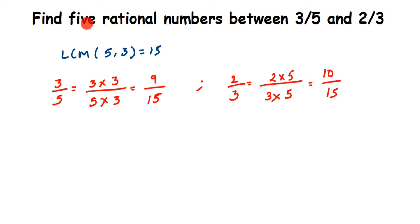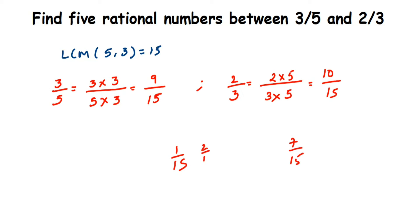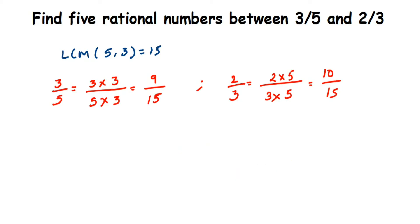The question asks for five rational numbers, but between 9/15 and 10/15, there are no whole numbers between 9 and 10 — after 9, the next number is immediately 10. For example, if you had 1/15 and 7/15, you'd have many numbers in between like 2/15, 3/15, up to 6/15. But here the gap is very small, so we need to increase it.